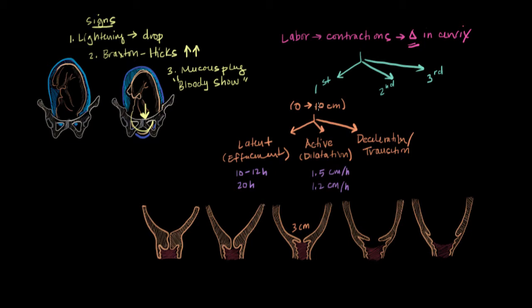Okay, so now we have a fully effaced, fully thinned out, and a fully dilated cervix. The second stage of labor marks the period between when you have a fully dilated cervix to the delivery of the baby. For a lot of people, this is what's known as the pushing stage. And usually, this should take less than an hour in a woman who's done it before and less than two hours in a first-time mom.